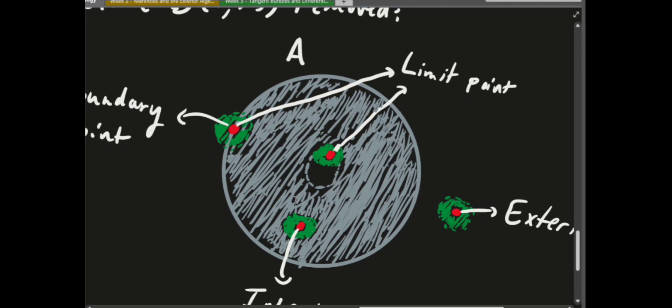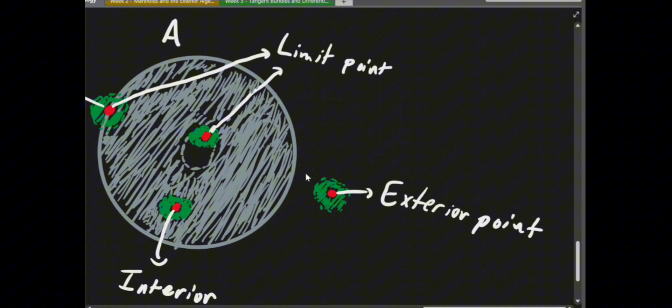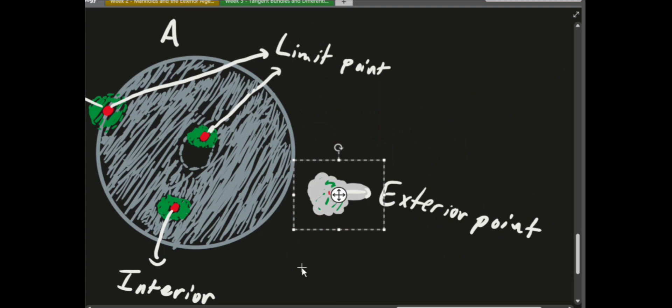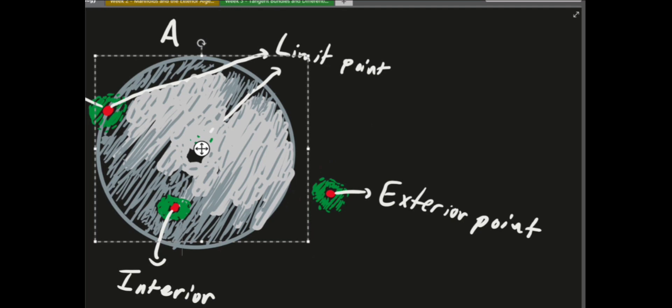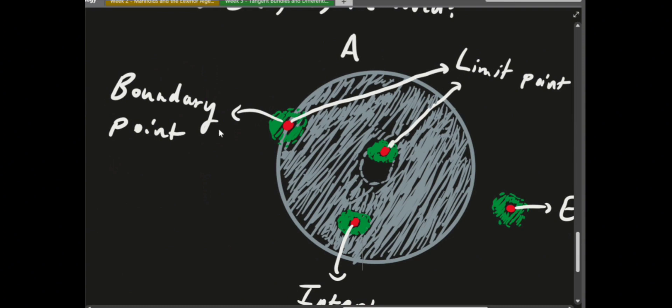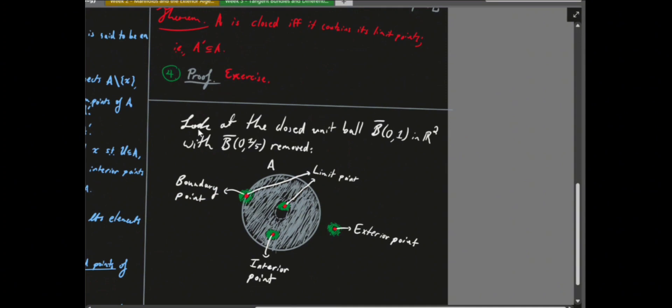Interior points are always limit points. Exterior points are points where you can draw a little open neighborhood — since we're working in R2, the basic open sets are patches around points. You can draw a green neighborhood around a point such that that neighborhood doesn't intersect the gray set at all, so we say it's an exterior point. If I can separate the point by an open neighborhood from the set, then it's an exterior point.